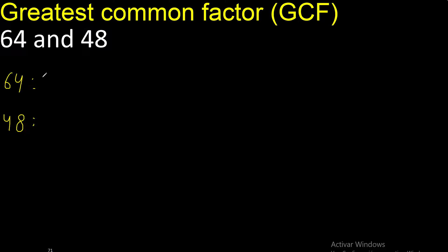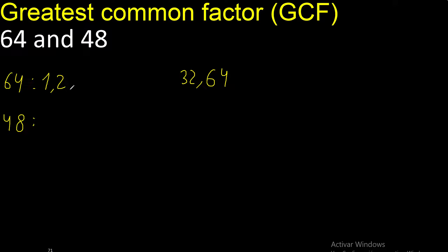Factors. Always start with 1. 64 divided by 1 is 64. Next, divided by 2. Next, cannot be divided by 3. Next, divided by 4.